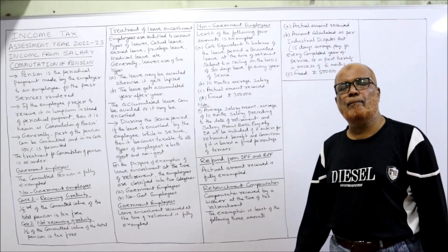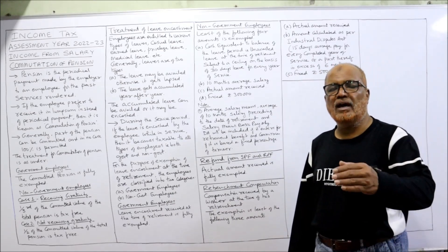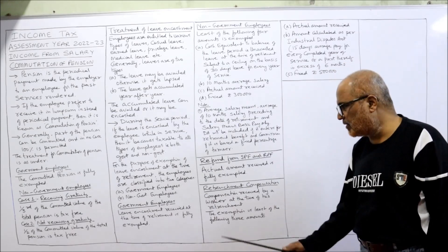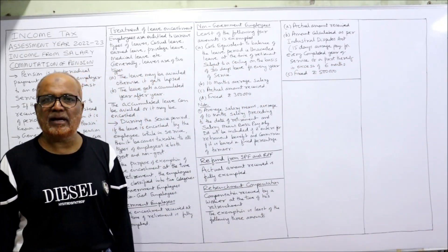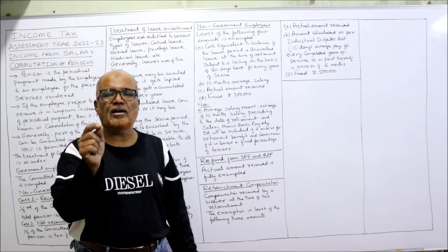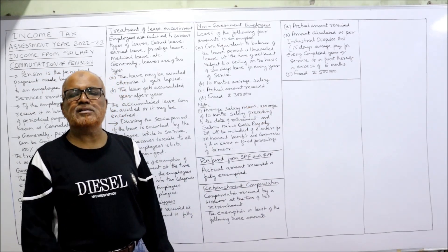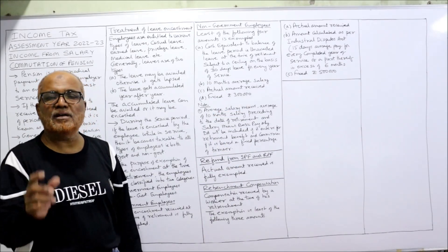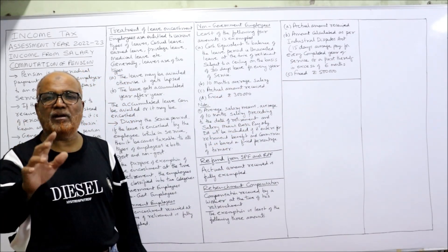Last: retrenchment compensation — compensation received by a worker at the time of retrenchment. If the employer has retrenched employees due to a number of reasons, some compensation will be given. The exemption is the least of the following three amounts given by the Income Tax Act. First: actual amount received. Second: amount calculated as per the Industrial Disputes Act — which provides 15 days average pay for every year of service completed, or a part thereof in excess of six months. Third: a fixed amount of five lakh. The least of these three is exempted; the remaining is taxable.